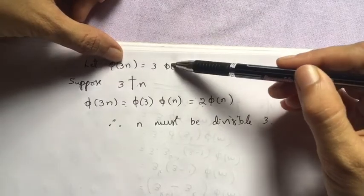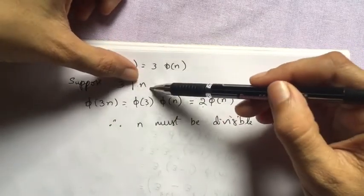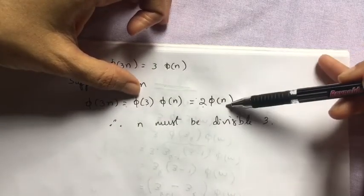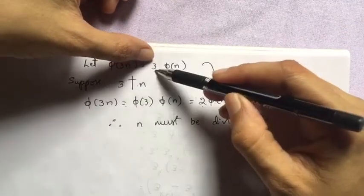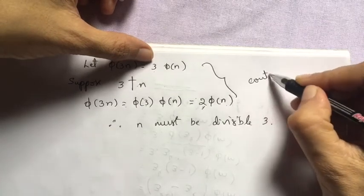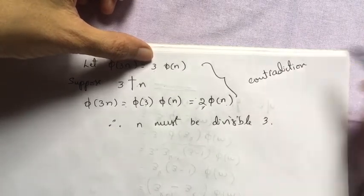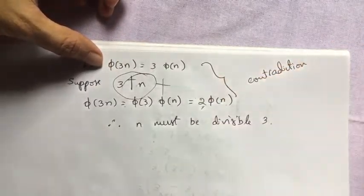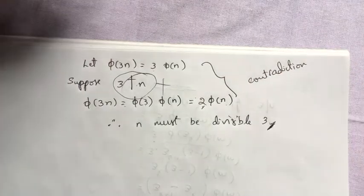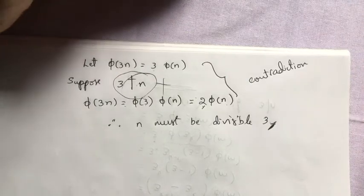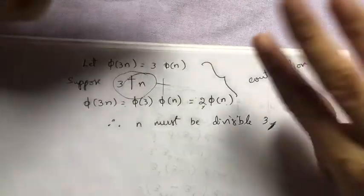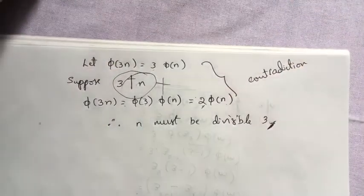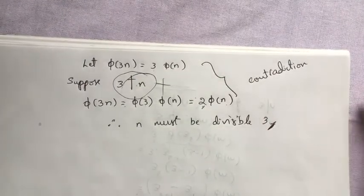To complete the proof: if we assume phi(3n) = 3 × phi(n) and suppose (for contradiction) 3 does not divide n, then phi(3n) = phi(3) × phi(n) = 2 × phi(n), giving 3 = 2, which is impossible. Therefore n must be divisible by 3. Hence phi(3n) = 3 × phi(n) if and only if 3 divides n, and phi(3n) = 2 × phi(n) if and only if 3 does not divide n.